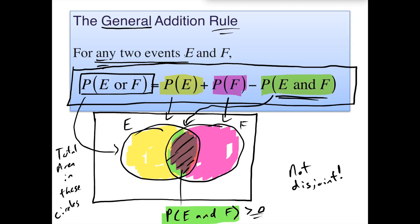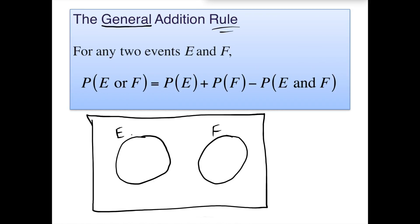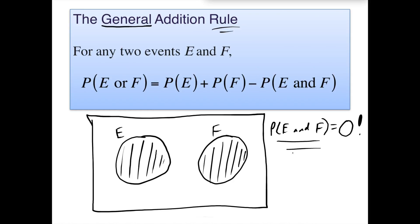This general rule actually works for mutually exclusive events too, because mutually exclusive events have no overlap. So the probability of E or F is the probability of E plus the probability of F. But since disjoint events have a probability of both happening equal to zero, subtracting that overlap term doesn't change anything — the rule reduces to exactly the simple addition rule.